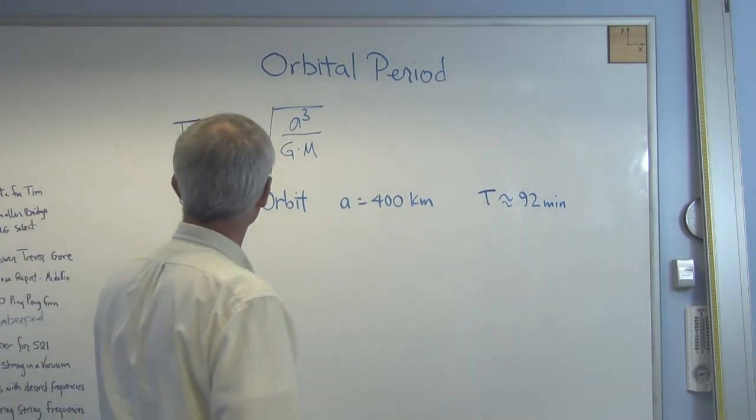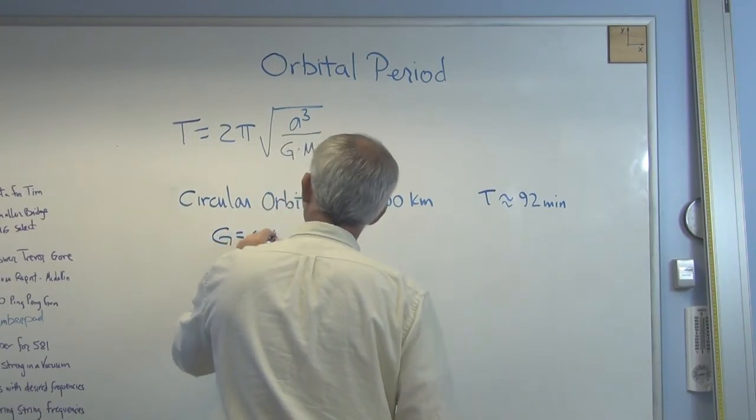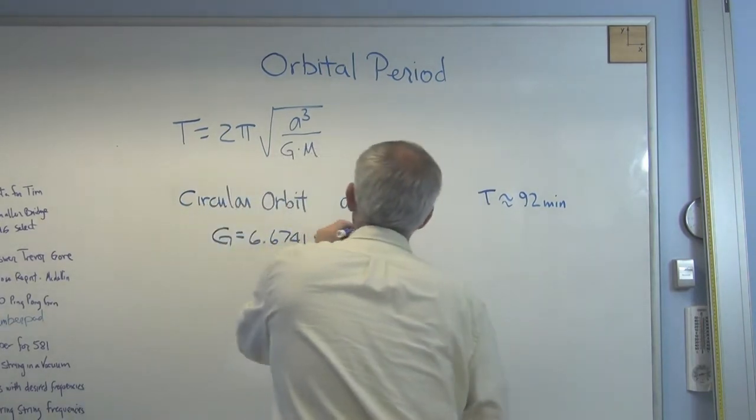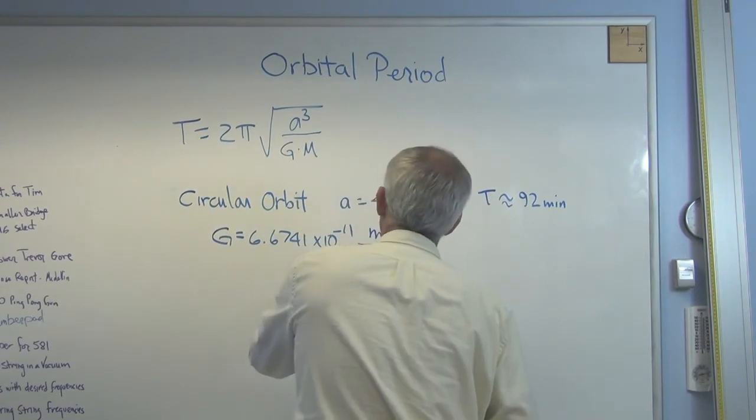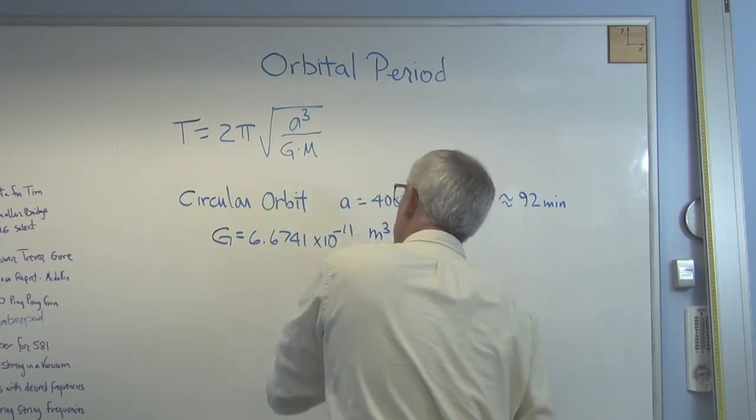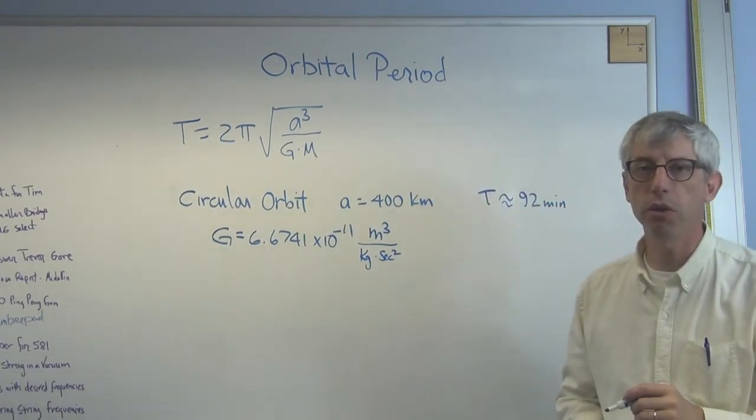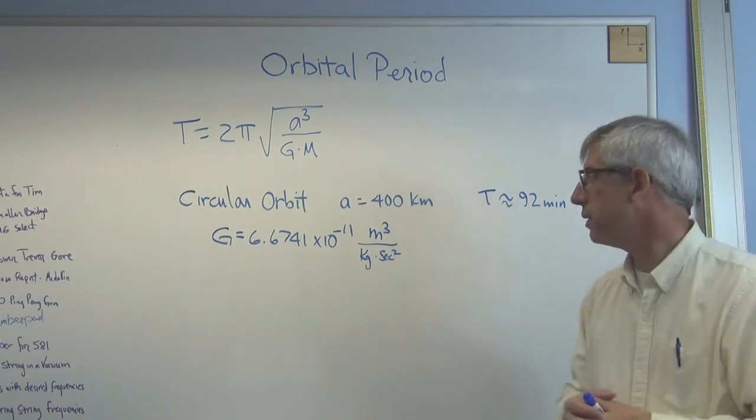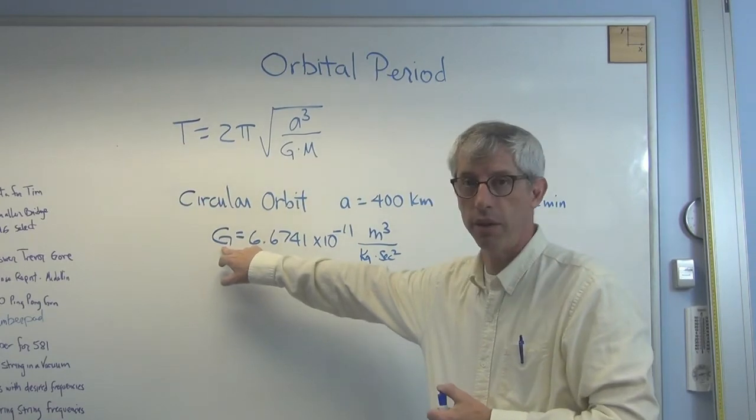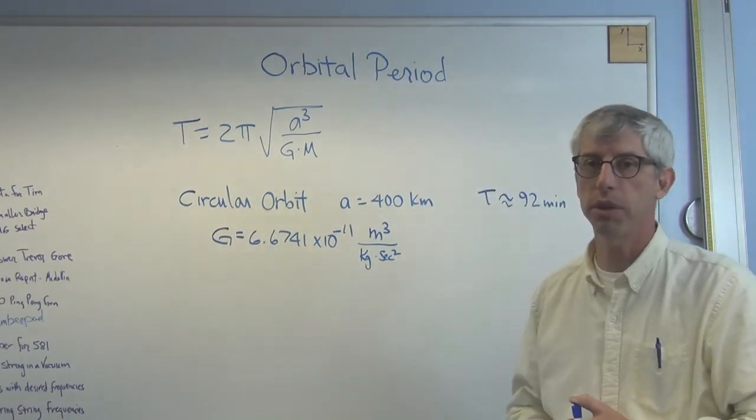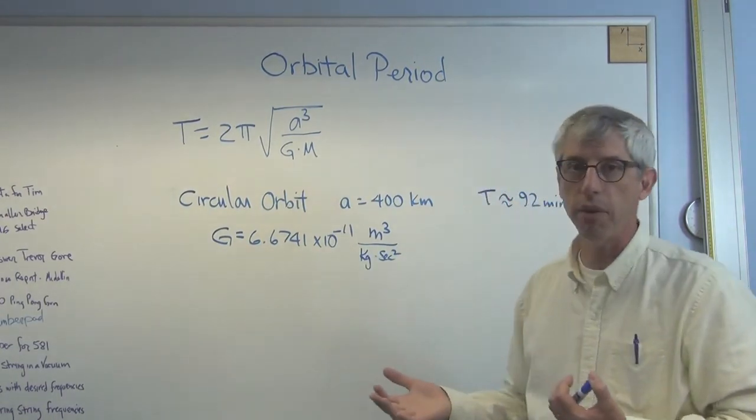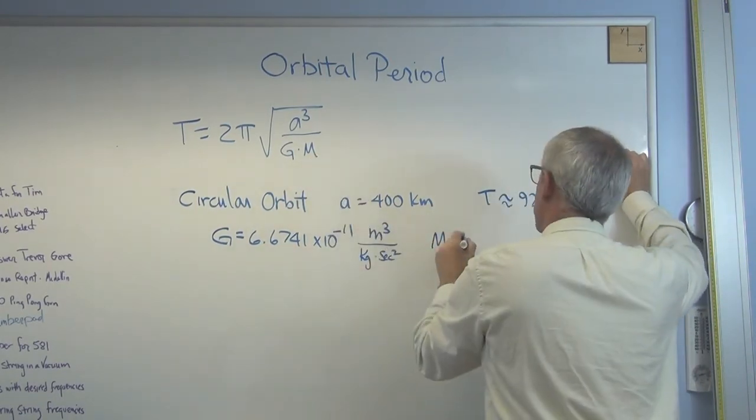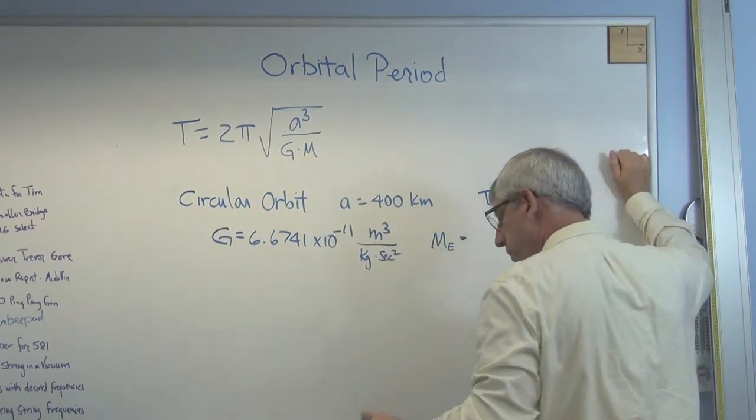G, we know what that is. That's 6.6741 times 10 to the minus 11 meters cubed per kilogram second squared. Now remember, that big G is the universal gravitational constant. That's a constant that seems to be woven into the fabric of the universe. This is not the acceleration of gravity at the surface of the Earth. This is not 9.81 meters per second squared. This number is true, we think, everywhere, as near as we can tell. So the mass of the Earth, which is what's going to go right there, this is the mass of the body that's being orbited.